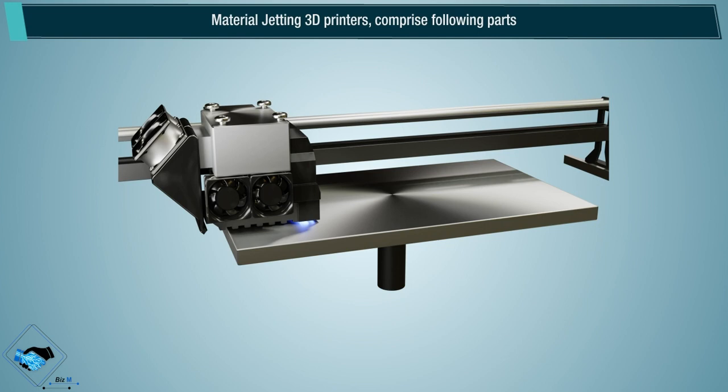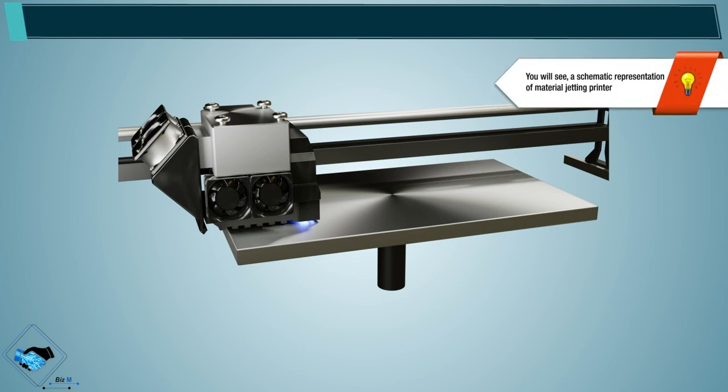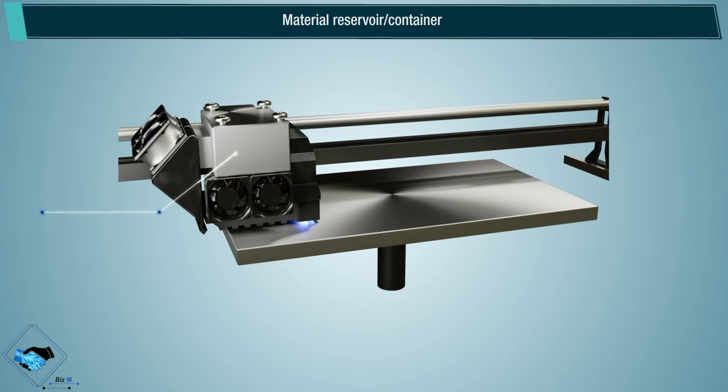Material jetting 3D printers comprise the following parts: material reservoir container, which carries thermostat photopolymers in liquid form. This can be part of the printhead.